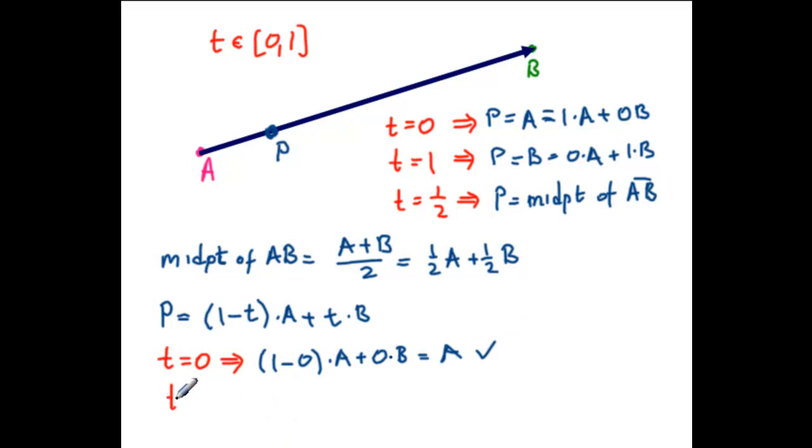When T equals one, we have one minus one times A plus one times B. That is zero times A, so that's just B. Check.